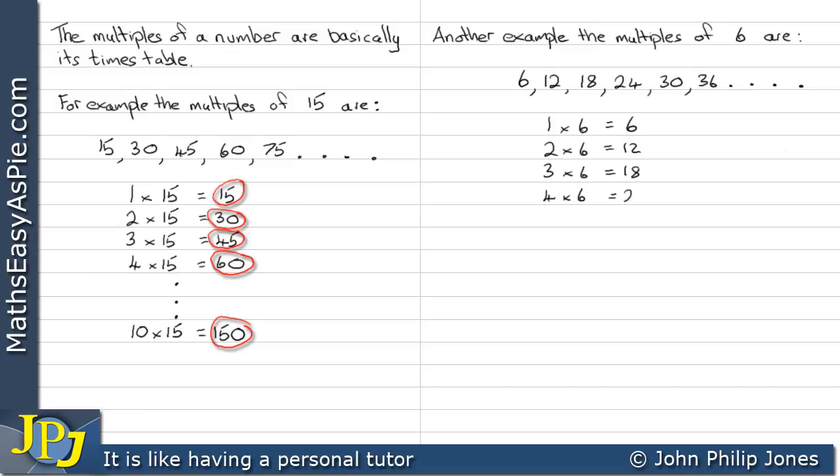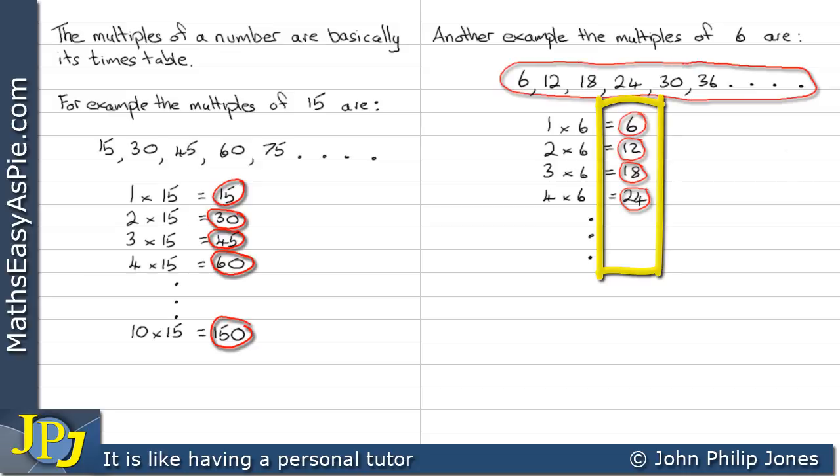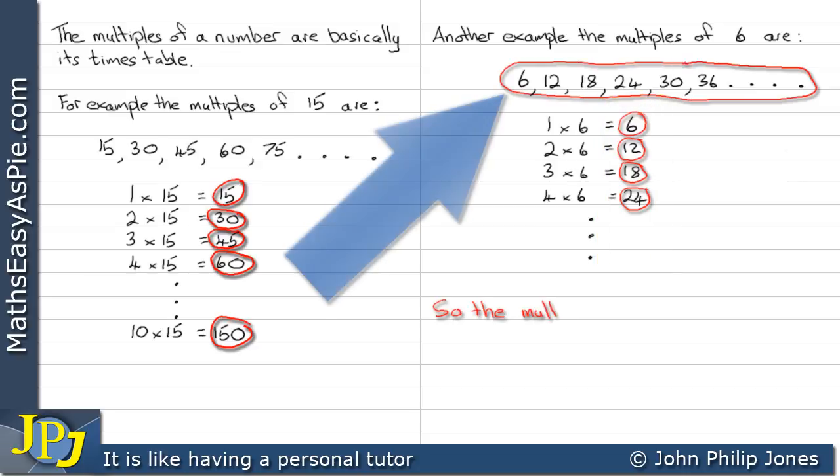which is 1 times 6 gives us 6. And we can see here that all I'm doing is writing out the multiplication table. So we can see the multiples are 6, 12, 18, and 24. And I've listed them up here.